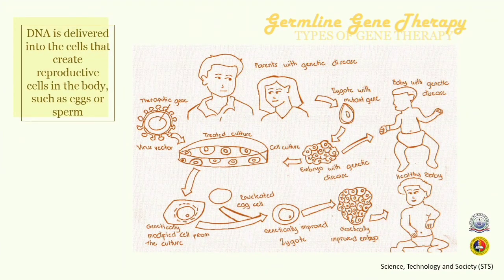On the other hand, when DNA is delivered into the cells that create reproductive cells in the body, such as eggs or sperm, it is referred to as germline gene therapy. This type of therapy enables the repair of disease-causing gene variations that are inherited from generation to generation. As shown in the illustration, when parents have a genetic disease, the zygote with a mutant gene will result in an embryo with genetic disease and a baby with genetic disease. However, with germline gene therapy, the embryo with genetic disease is treated in a cell culture. The therapeutic gene is inserted via a virus vector, and the genetically modified cell from the culture, combined with the inoculated egg cell, results in a genetically improved zygote, leading to a healthy baby.